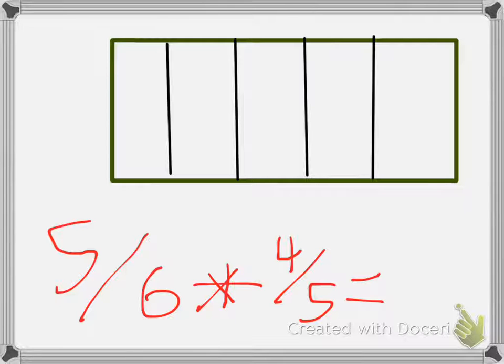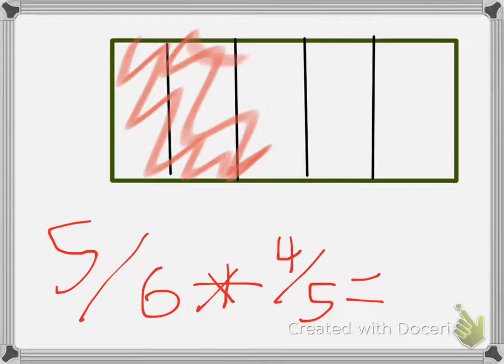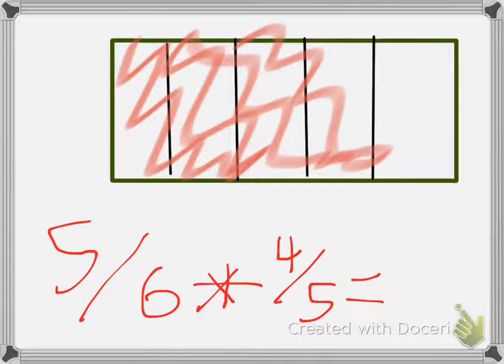Now, I'll just shade 4 fifths. I'm using highlighter, which is transparent, so it's easier to see where you are and the lines.